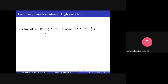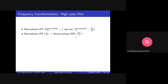First, we design a normalized low pass filter with specifications: Omega P normalized equals 1 radian per second, Omega S normalized equals Omega P by Omega S, passband ripple Delta P, and stopband attenuation Delta S. Once you design either a Butterworth or Chebyshev low pass filter with these specifications, we will then apply the transformation: replace S with Omega P by S. This corresponds to the denormalized high pass filter. Replace S with Omega P by S in the H(S) expression to get a high pass filter with specifications Omega P, Delta P, Omega S, and Delta S.